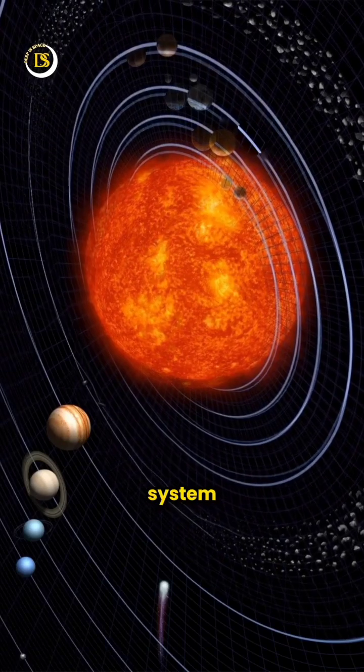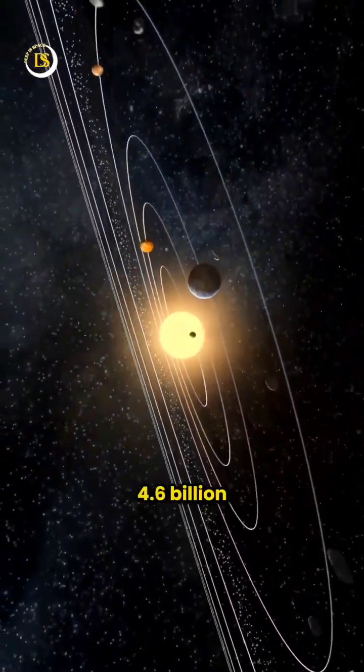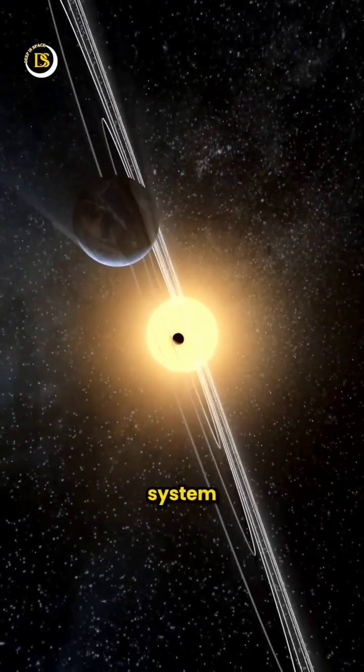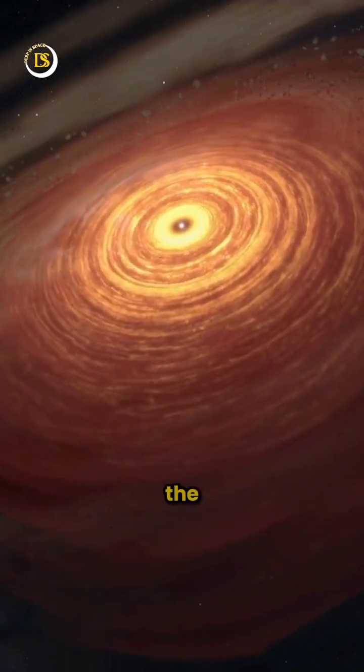The formation of our solar system, according to the nebular hypothesis, occurred approximately 4.6 billion years ago. The solar system originated from a massive rotating cloud of dust and gas called the solar nebula.